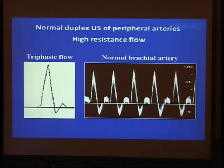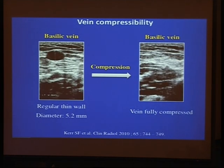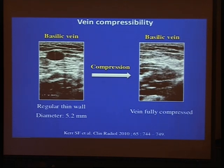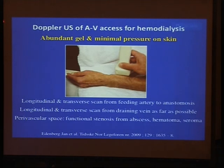We also have to assess the spectral Doppler waveform — this is the triphasic waveform, the normal spectral waveform inside the radial artery. For the vein, the diameter must be even more than 2.5 mm — here it is 5 mm, which is optimum for creation of the fistula. We have to assess the compressibility by applying compression with the probe: complete compression of the vein indicates that the patency of the vein is preserved with no thrombus inside.